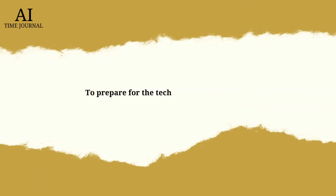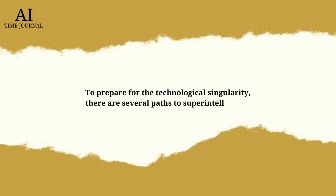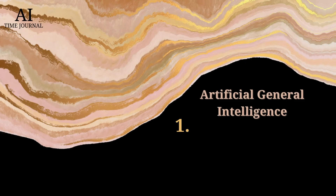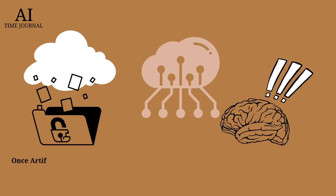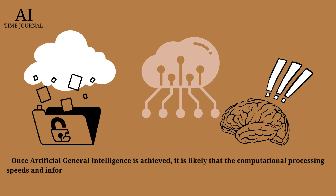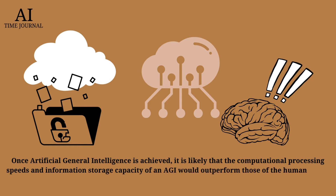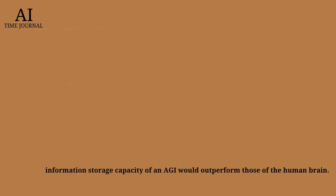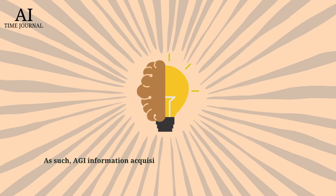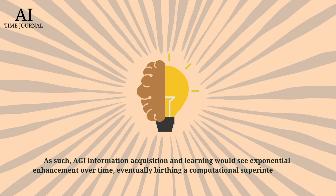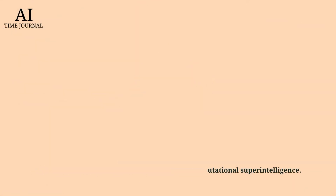To prepare for the technological singularity, there are several paths to superintelligence. Path 1: Artificial General Intelligence. Once artificial general intelligence is achieved, superintelligence will necessarily follow. It is likely that the computational processing speeds and information storage capacity of an AGI would outperform those of a human brain. As such, AGI information acquisition and learning would see exponential enhancement over time, eventually birthing a computational superintelligence.